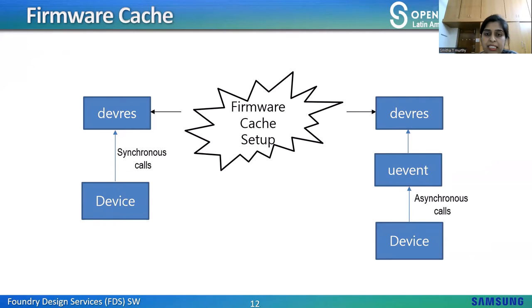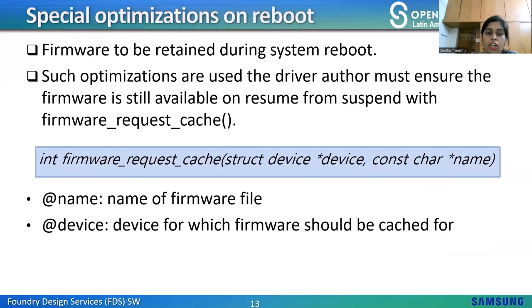The timeout for the fallback mechanism is temporarily reduced to 10 seconds as the firmware cache is set up during suspend, then restored after the cache is set up. Upon suspend, any pending non-uevent firmware requests are killed to avoid stalling the kernel. Kernel calls requiring non-uevent need to implement their own firmware cache mechanism and must not use the firmware API on suspend. Some devices retain firmware during system reboot without reloading; when such optimizations are used, the driver must ensure firmware is still available on resume. This can be done with firmware_request_cache, which caches firmware for suspend so resume can use it. It is not compatible with request_firmware_into_buf or request_firmware_nowait with uevent set to false.